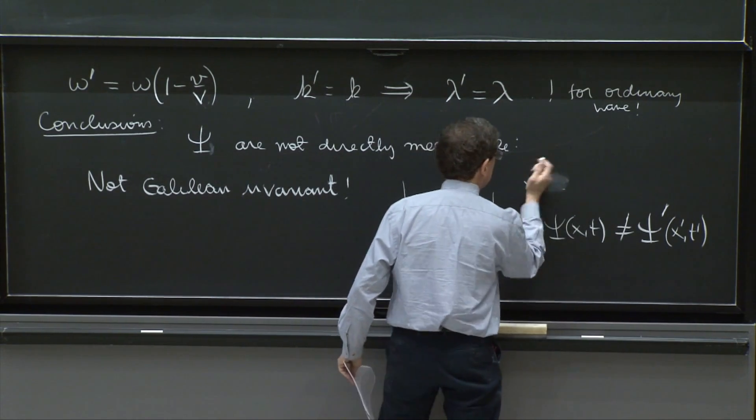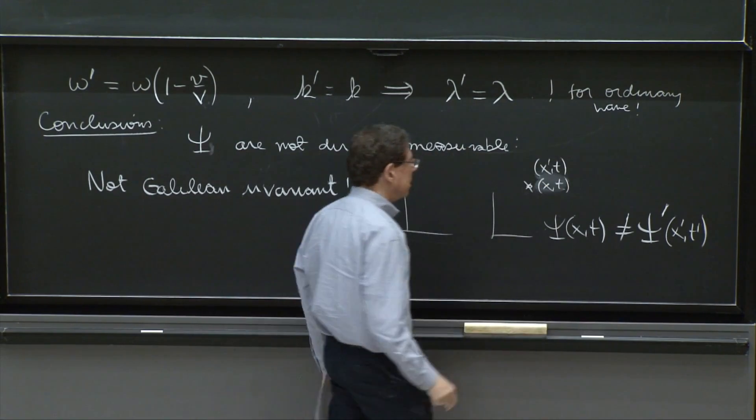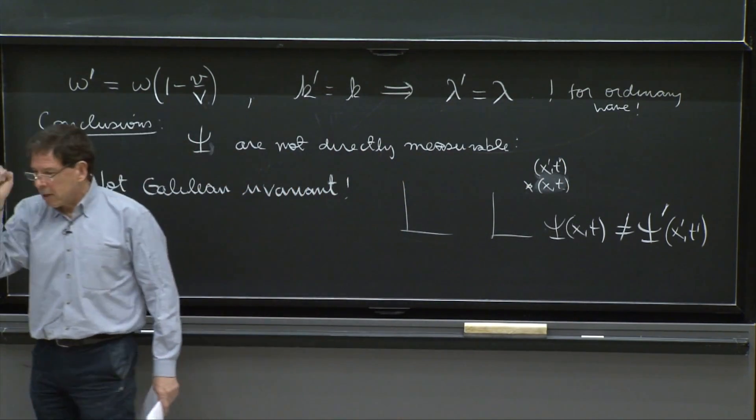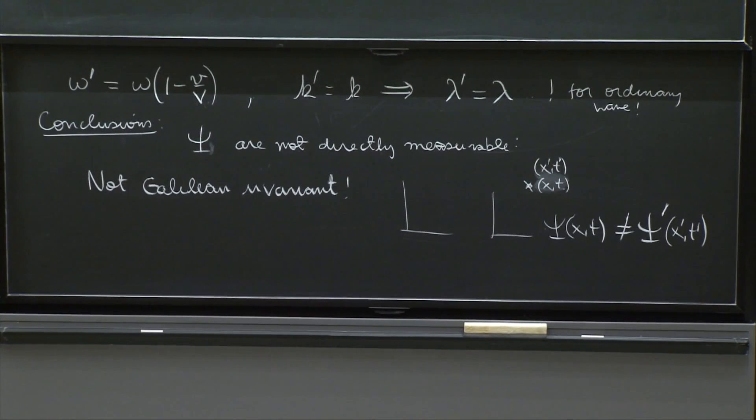So the end result, if you have a point here at some time t, the wave function psi of x and t is not going to be the same as the wave function measured by the prime observer at x prime t prime. These are two different labels for the same point. You're talking about the wave function at the same point at the same time. You still don't agree. These two people will not agree.